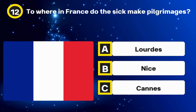Question 18. If you had rubella, what would you have caught? Options: German measles, Chicken pox, Mumps. The answer: German measles.